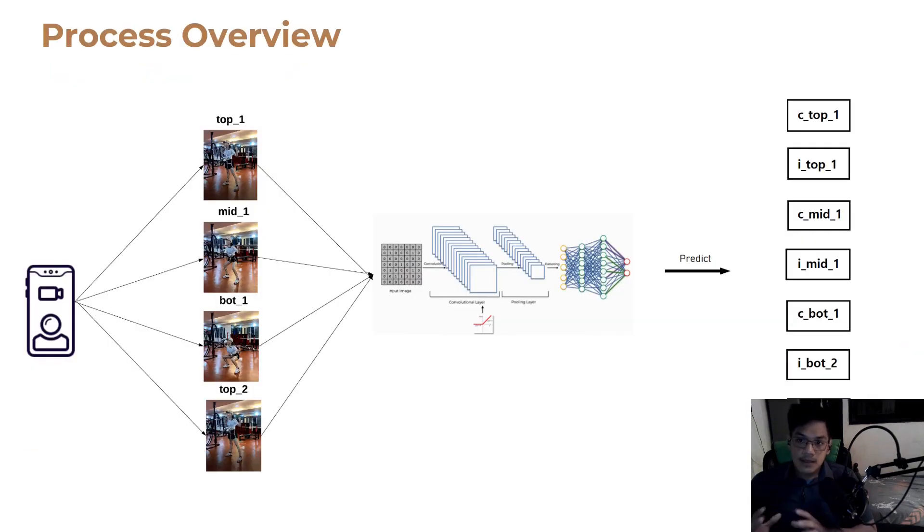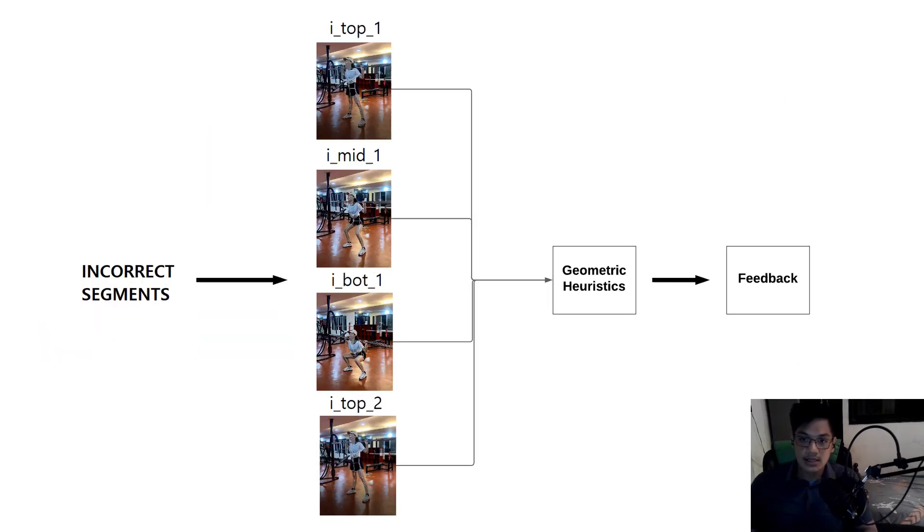This is the bird's eye view of the entire system. It all starts with the real-time pose estimation and squat segmentation. After one repetition, this module gives us 4 segments, which will then be passed on to the CNN. The CNN is responsible for assigning each segment to their corresponding class. All incorrect segments will then be passed on to the geometric heuristics for calculation. Finally, we expect a feedback from the system with specific instructions to improve the squatting motion.